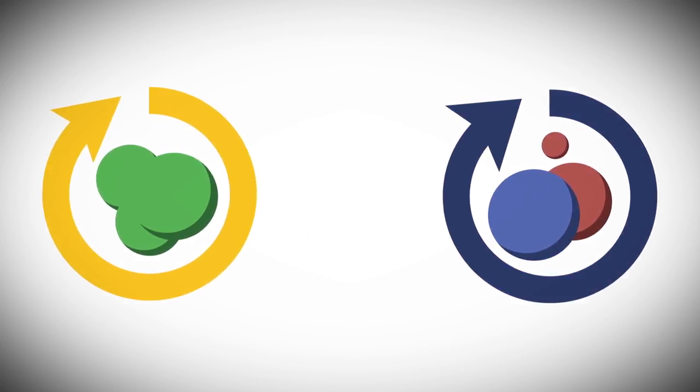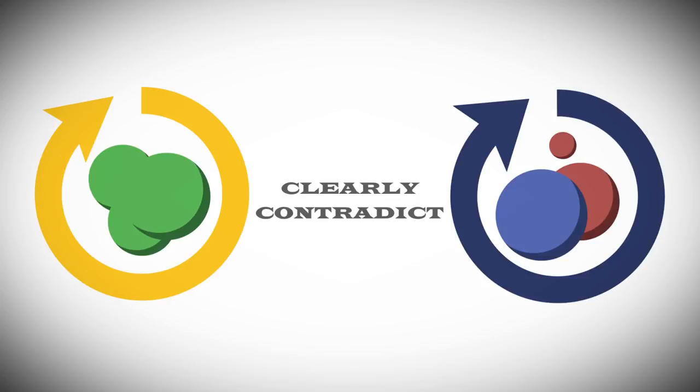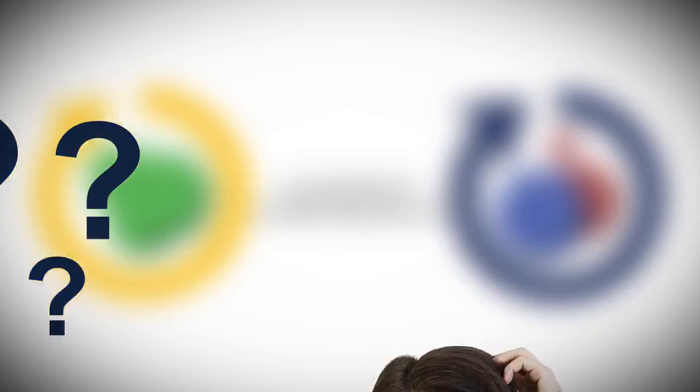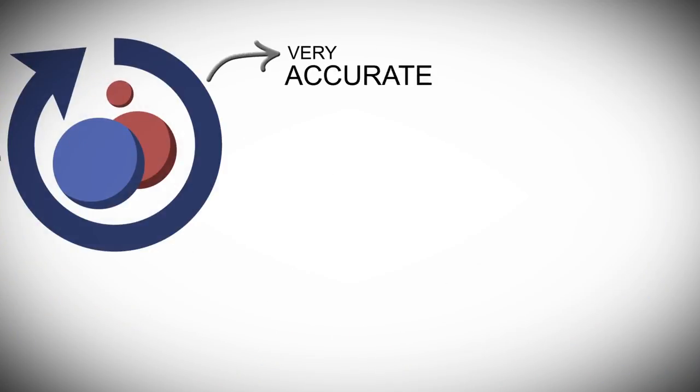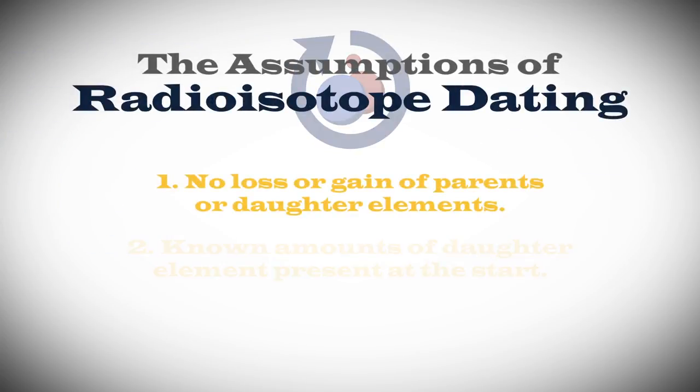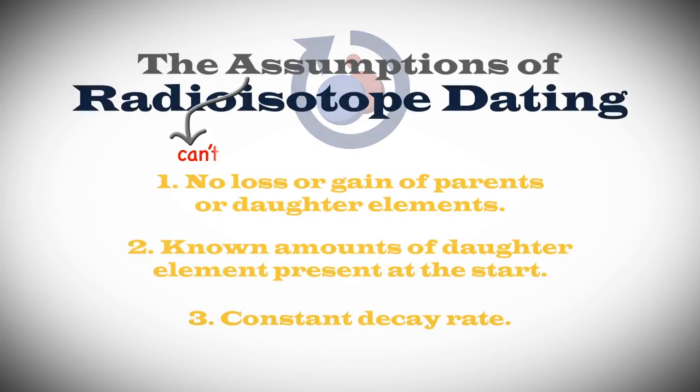Radioisotope and radiocarbon ages can clearly contradict one another, so how can we know which method to trust? Measuring isotopes is very accurate, but the assumptions needed to convert those measurements into ages can't be verified.